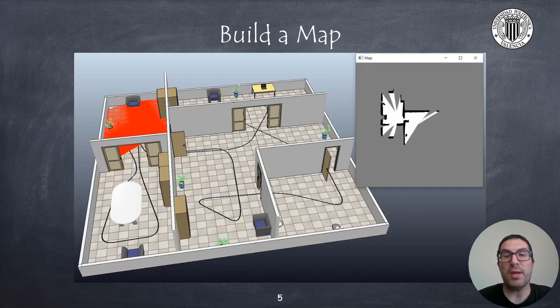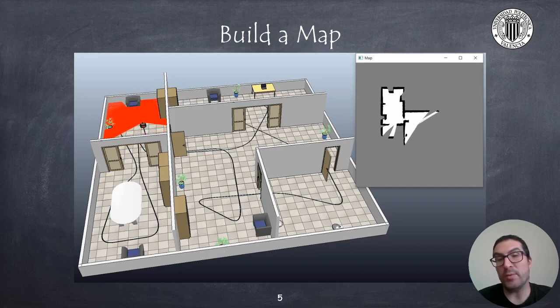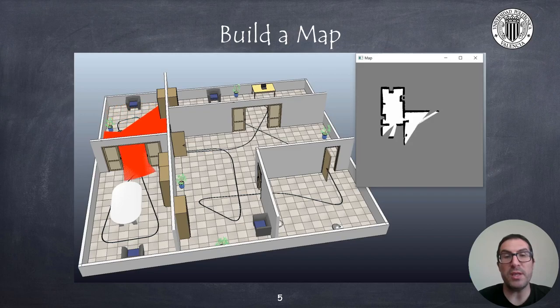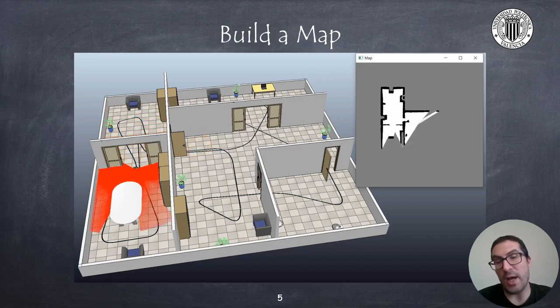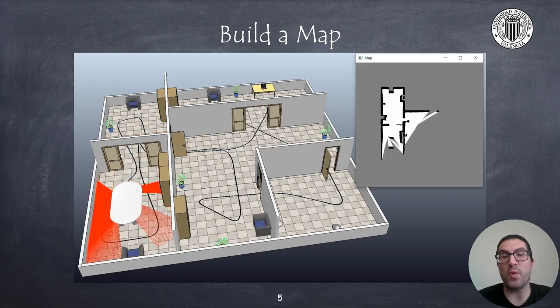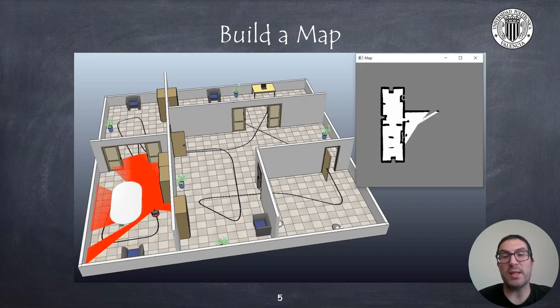Here I show how the plugin that I'm about to describe works. As you can see, the robot builds a map incrementally as it moves from room to room.